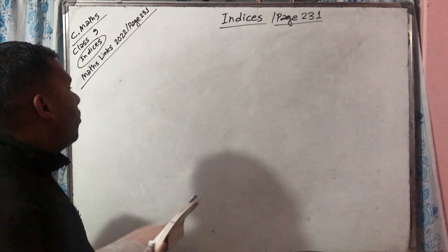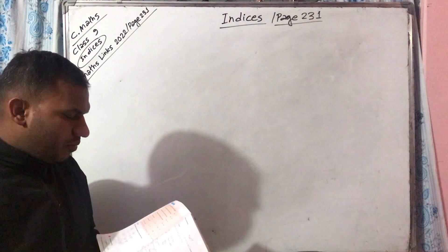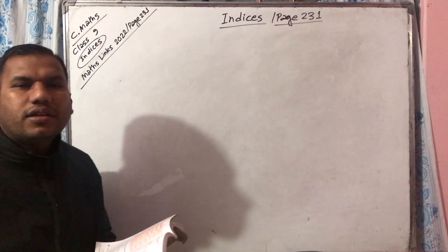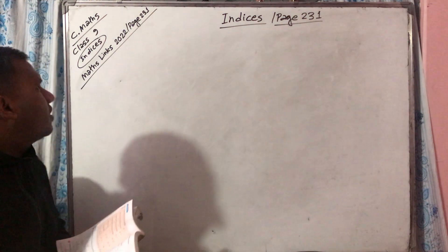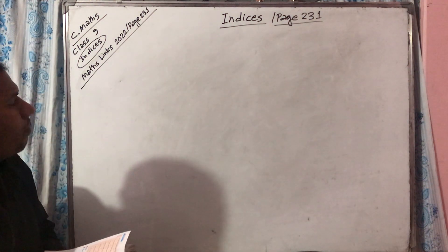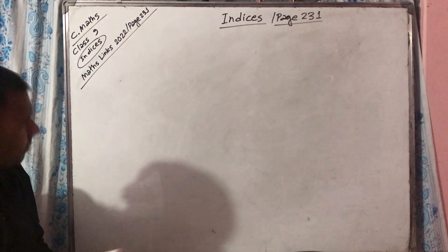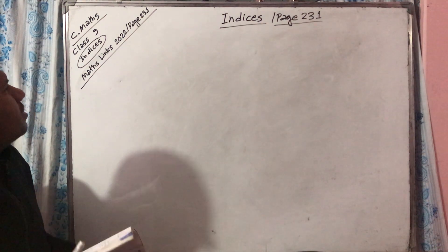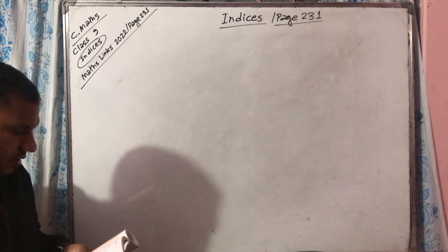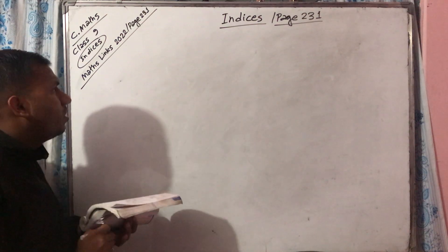Welcome students, good morning. Today we will do some questions from class 9 commissary mathematics, 2022 edition, page 231. Today our topic is indices. Let's start from question number 3.